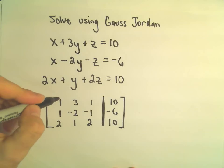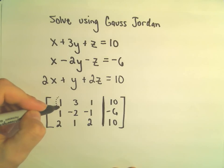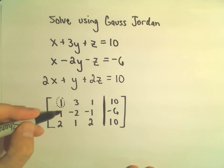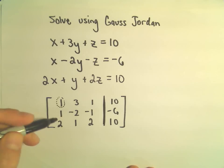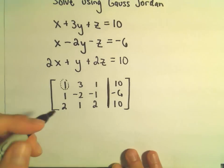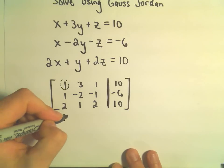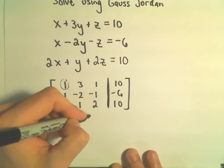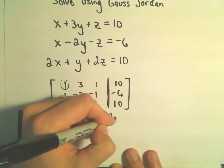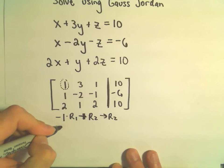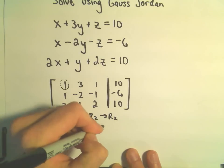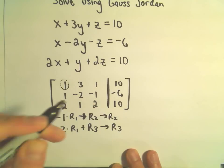The first thing I want is to get a 1 in the top left corner, which we already have. My next step is to get zeros in the rest of that column. So I'm going to do two steps at once: take negative 1 times row 1 and add that to row 2 to get my new row 2. I'm also going to take negative 2 times row 1 and add that to row 3 to get my new row 3.